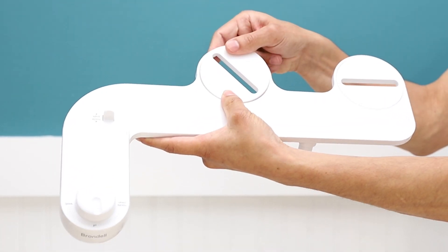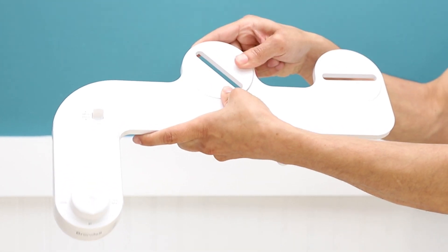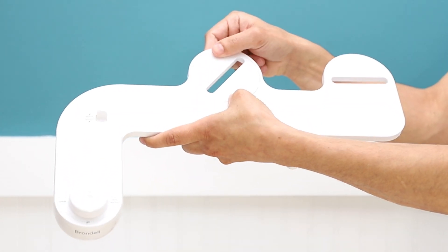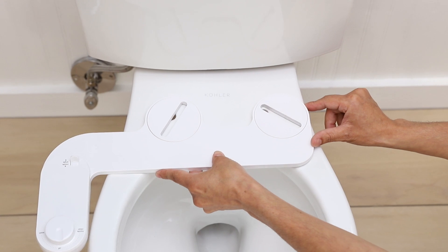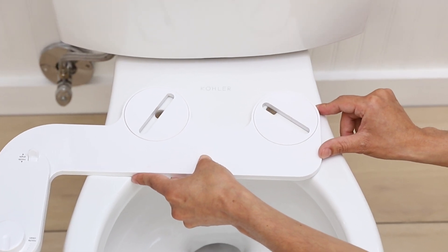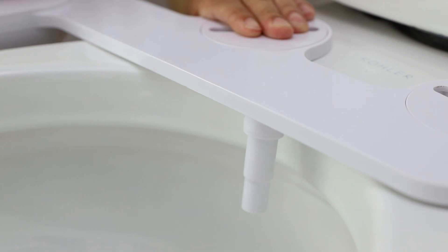Place circular mounting brackets into the circular openings of the bidet attachment. Place the bidet attachment on the toilet with the nozzle close to the back of the toilet, leaving a slight gap between the toilet and the nozzles.